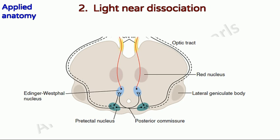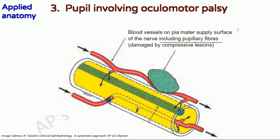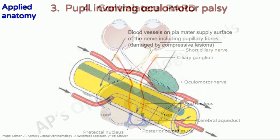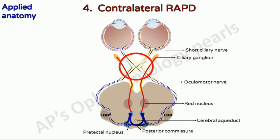This is responsible for light-near dissociation, where the pupil is relatively unresponsive to light but constricts normally to accommodation. This is seen classically in tabes dorsalis and in Parinaud's dorsal midbrain syndrome, among others. Pupillomotor fibers are situated superficially in the superomedial portion of the oculomotor nerve in the subarachnoid space, making them susceptible to compressive lesions — most commonly posterior communicating artery aneurysms, which affect the blood supply to the fibers and cause direct compression. The nasal crossing is asymmetric, with each optic tract receiving approximately 53 percent of input from the contralateral eye, making the temporal field larger.